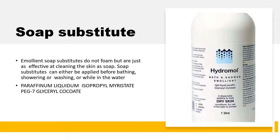Moving on to the applications of emollients: since they are termed building blocks, they are found in a large number of cosmetic preparations. One use is as a soap substitute. Emollient soap substitutes do not foam but are just as effective at cleaning as soap. They can be applied before bathing, showering, or washing, or while in the water. Examples include paraffin liquidum, isopropyl myristate, PEGs, and glyceryl cocoate.